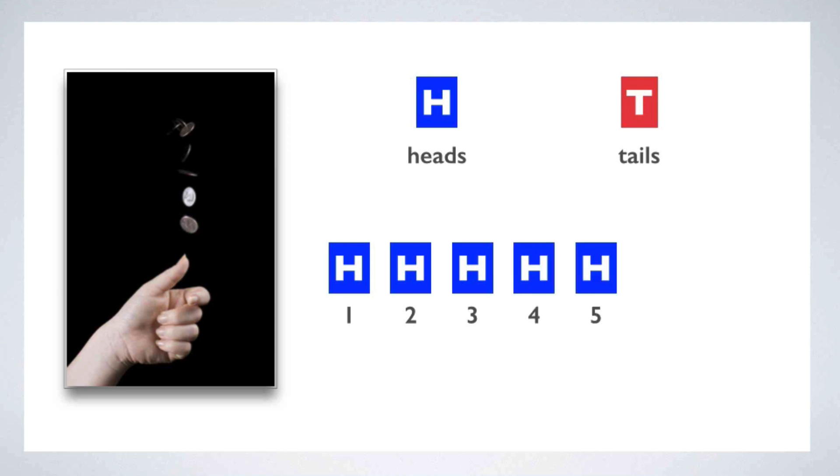Heads, heads, heads. Six heads in a row. Now here's your question. Given this history, what do you think the chances are that on the seventh toss, the coin will land heads again? If you had to bet money on it, would you bet in favor of heads, tails, or put even money on both?